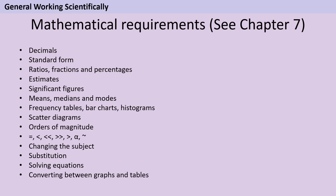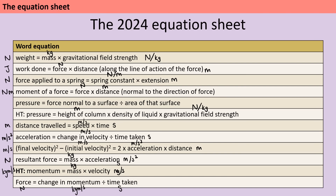You can find a full list of the skills in chapter 7 of the specification. Although in 2024 you do have the equation sheet, remember you need to memorise the units for each quantity. Also the sheet only contains each equation in a single format, so if you're not very confident in rearranging equations under pressure, you should memorise the rearranged versions.